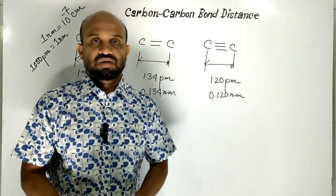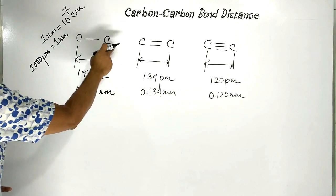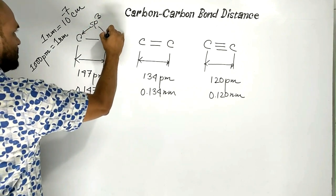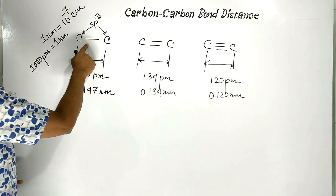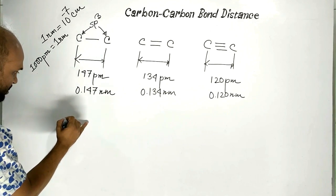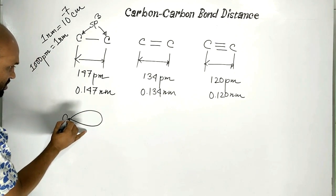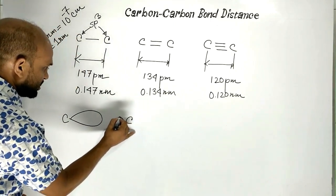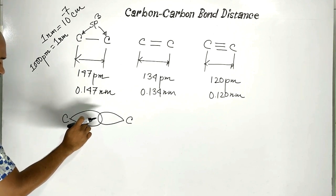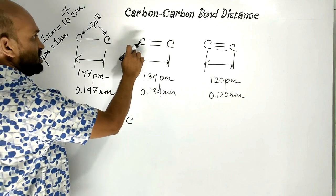Why is there a difference in carbon-carbon bonds? In the case of a carbon-carbon single bond, carbon atoms are sp3 hybridized because there are no pi bonds. Let us see the orbital structure: here we have sp3 hybrid orbitals on each carbon. In the case of sp3 hybridization, the orbitals are bigger in size.